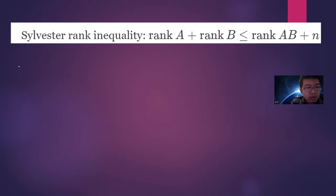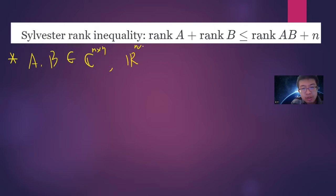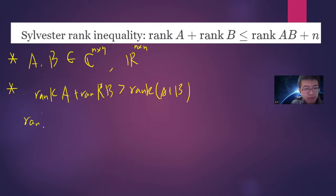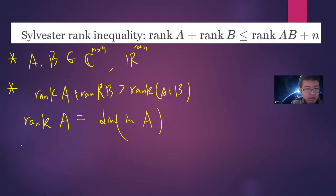So, assuming A and B are complex or real n-by-n matrices, the trivial inequality we know is that rank(A) + rank(B) is definitely greater than or equal to rank(A + B). Also recall that the rank of A is just the dimension of the image of A.